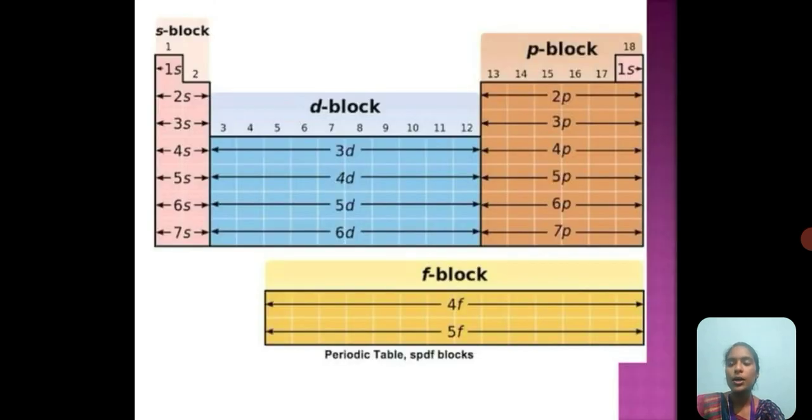This is the basic outline of your periodic table, where group 1 and 2 belong to S-Block Elements, and groups 13 to 18 belong to P-Block Elements. The D-Block Elements are also called Transition Elements, which are groups 3 to 12. We arrange the F-Block Elements below the periodic table, which are called Inner Transition Elements.